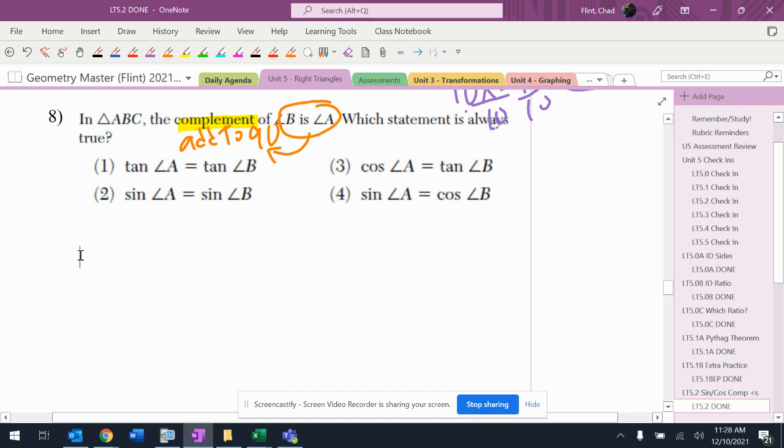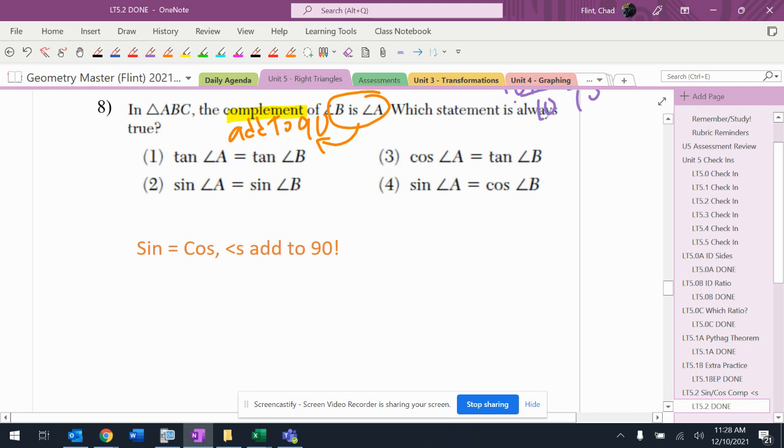So what I know is that when sine equals cosine, the angles add to 90. So if the angles add to 90, which I know is true, then that also has to be true.